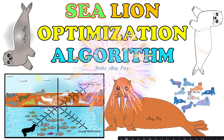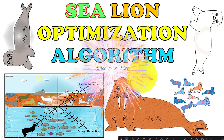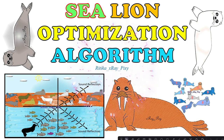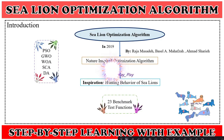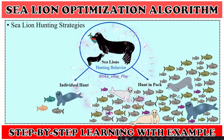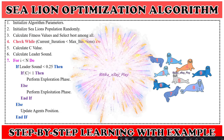In this video we will try to understand a new metaheuristic algorithm named the Sea Lion Optimization Algorithm. This algorithm is inspired by the hunting behavior of sea lions in nature. We can use this algorithm to solve optimization problems, and we will understand what this algorithm is about, how it works, sea lions' behavior, their hunting strategies, and step by step how this algorithm works.